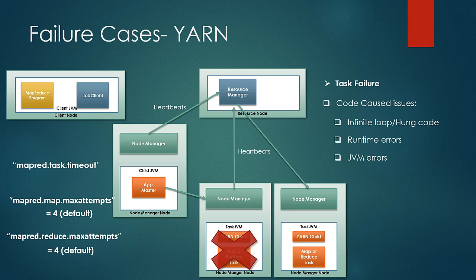After that many failures on reattempts as specified in these properties, the complete job would be marked as failed. In some jobs that process huge amounts of data with hundreds of tasks, failure of some tasks is acceptable, so failure of one or two tasks must not mark the complete job as a failure. For those cases, MapRed.Map.Failures.MaxPercent and MapRed.Reduce.Failures.MaxPercent are the properties used to decide the acceptable percentage of Map and Reduce task failures respectively before declaring a job failed.